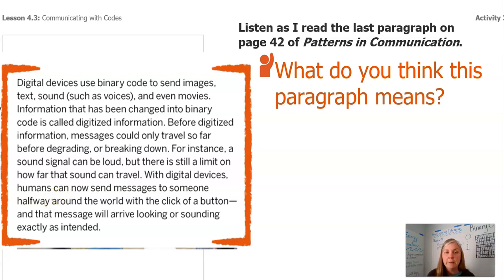Digital devices use binary code to send images, text, sound, such as voices, and even movies. Information that has been changed into binary code is called digitized information. Everybody say that quick, digitized. Before digitized information, messages could only travel so far before degrading or breaking down. For instance, a sound signal can be loud, but there is still a limit on how far that sound can travel. With digital devices, humans can now send messages to someone halfway around the world with the click of a button. And that message will arrive looking or sounding exactly as it intended.